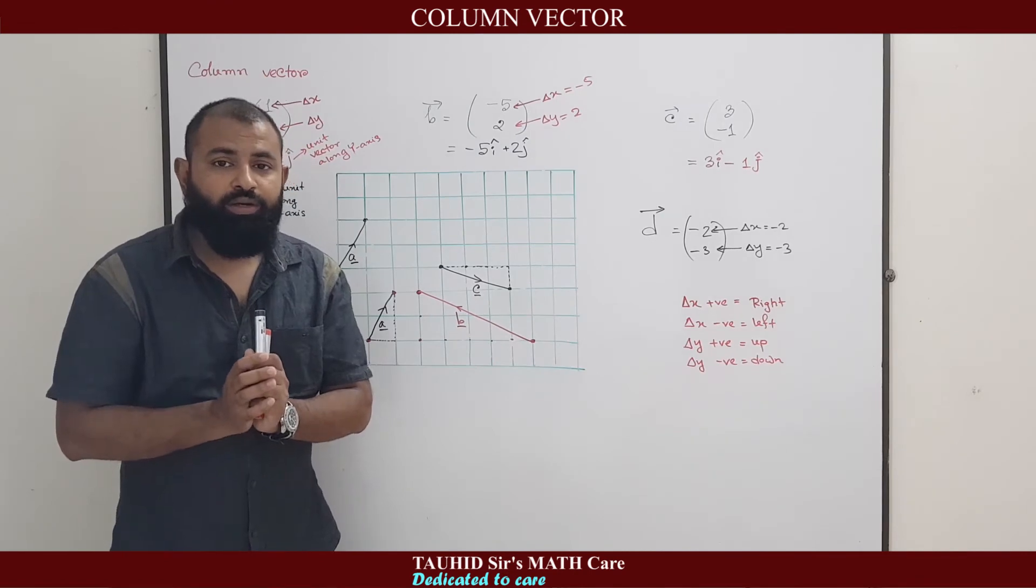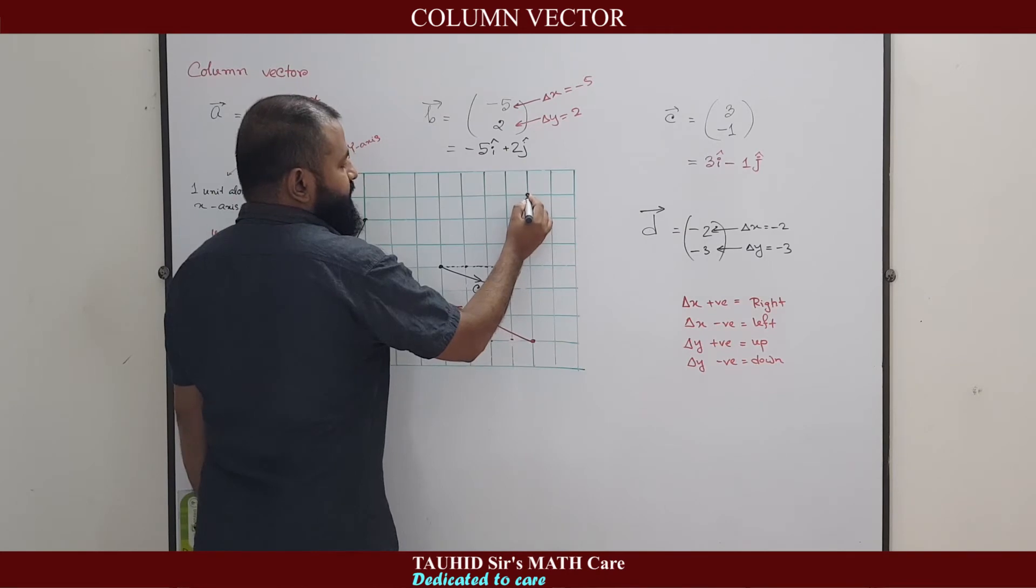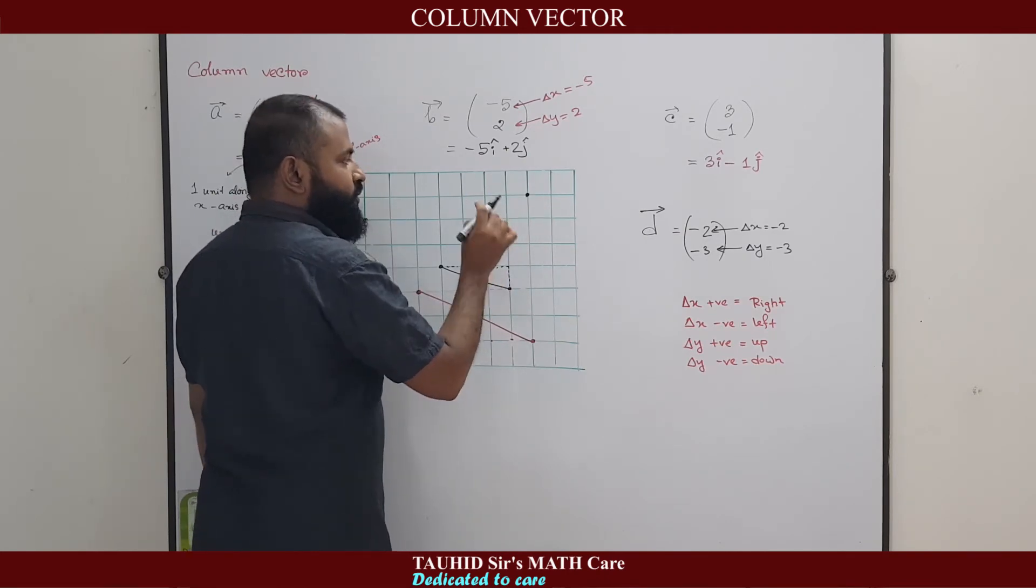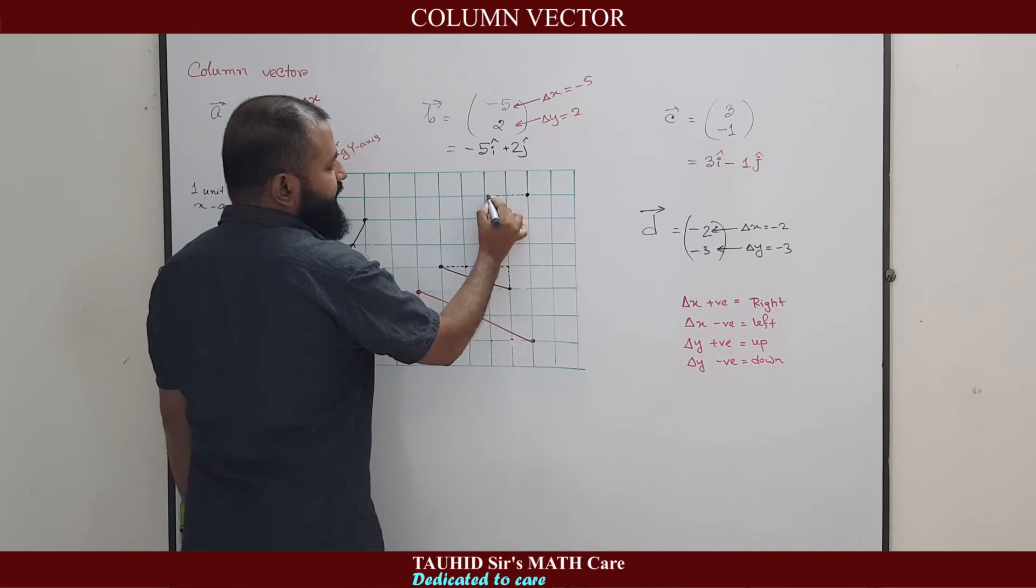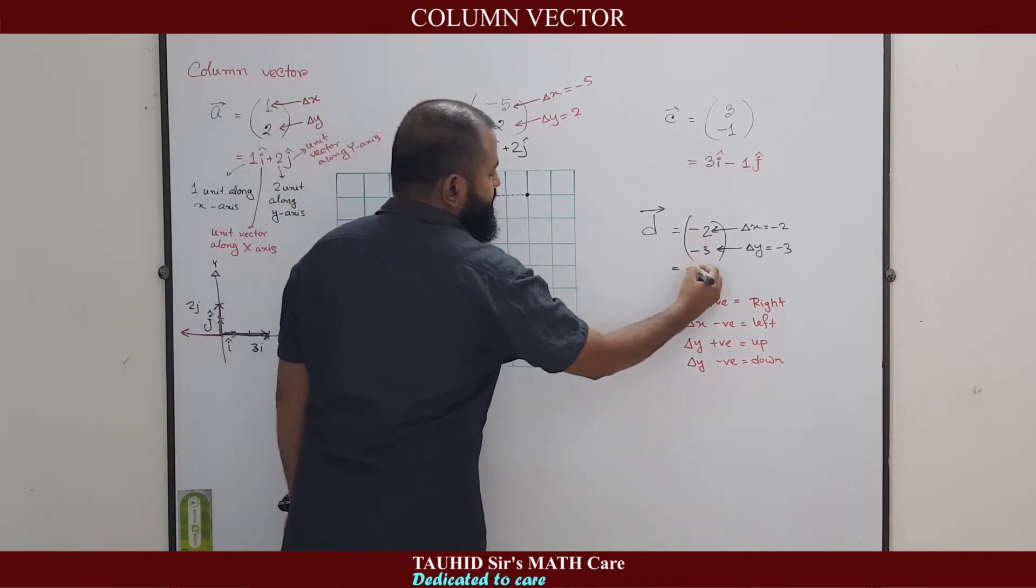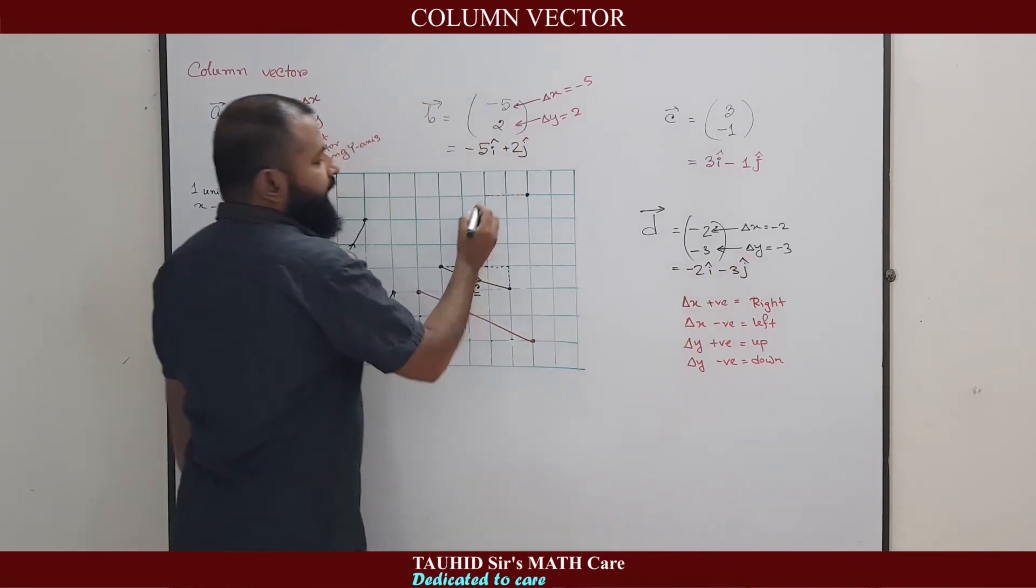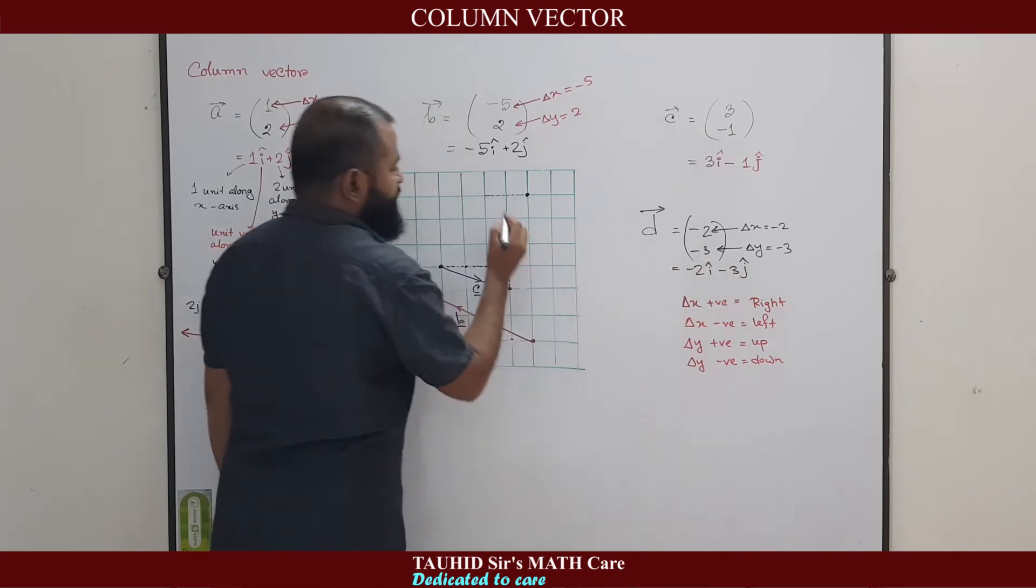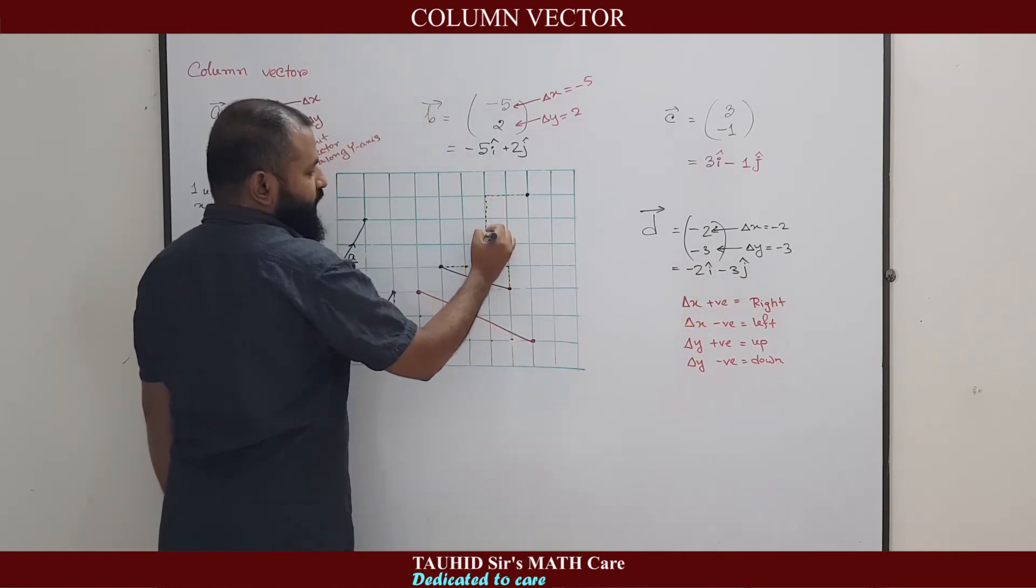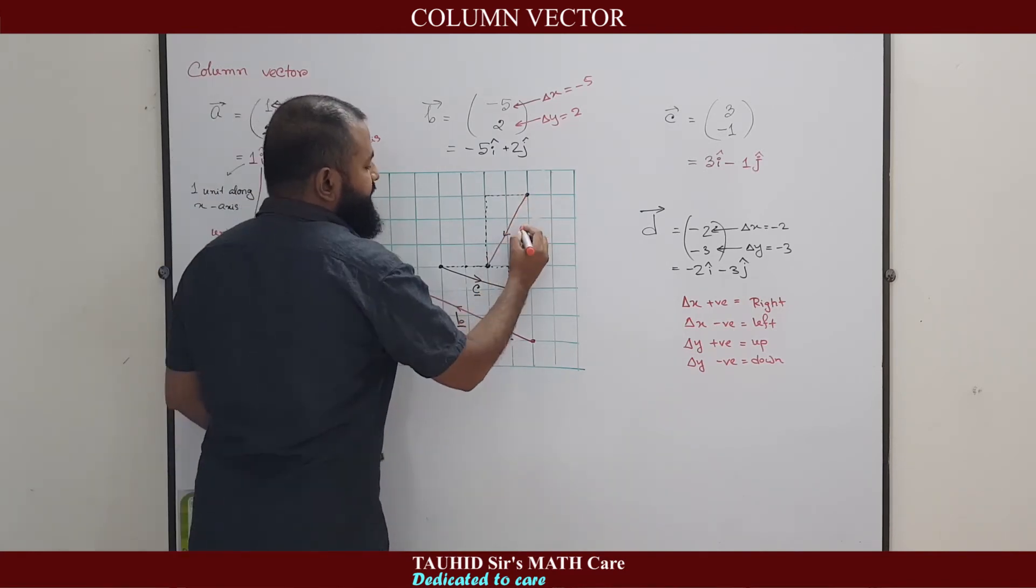How can we draw D? Let's assume this is the beginning point. We can assume any point as the beginning point. It will move two units left, minus 2. And for this minus 3, or for minus 3j, it will move three units down: 1, 2, 3. Therefore, this is our vector D.